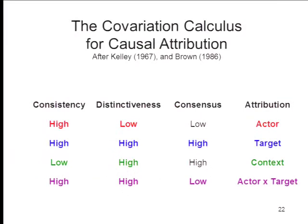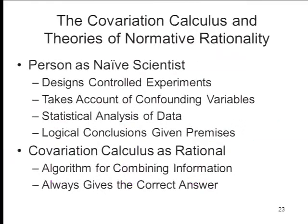That's how the covariation calculus works. You look at what factors — what kinds of causes — covary with the outcome. Does it vary with the actor? The target? The situation? Some combination? For each combination of consistency, distinctiveness, and consensus information, a particular attribution is driven. The covariation calculus is explicitly based on the statistical analysis of variance, making it a completely rational way to figure out cause. The person behaves much like a professional scientist would — they're naive scientists engaging in something like a controlled experiment.